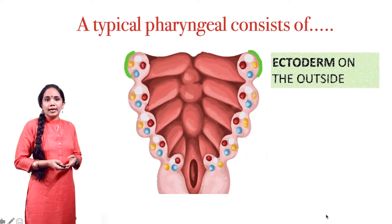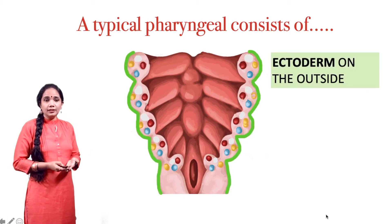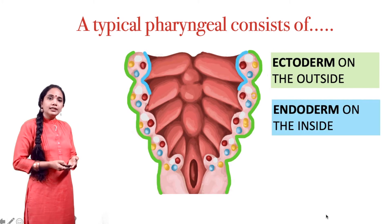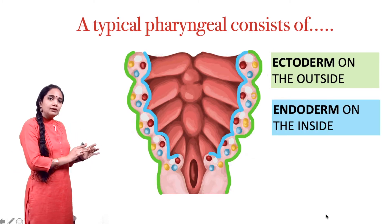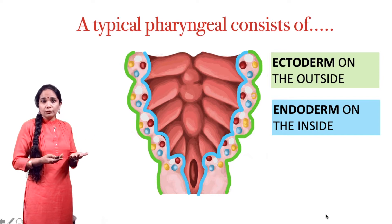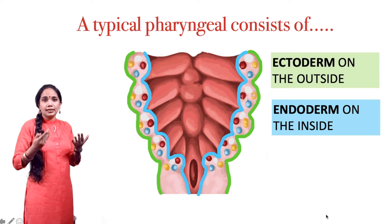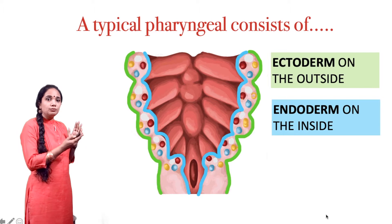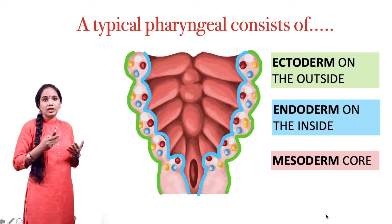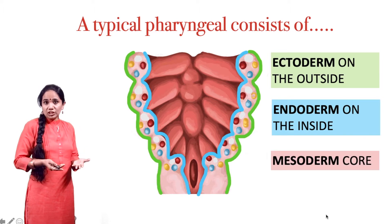Each arch has an outer ectodermal covering, shown here in green, and on the inside it is covered by endoderm. Between the ectoderm and endoderm we know there are three embryonal layers, and the third layer — the mesoderm — is found between the ectoderm and endoderm. So there is a mesodermal core for each arch.